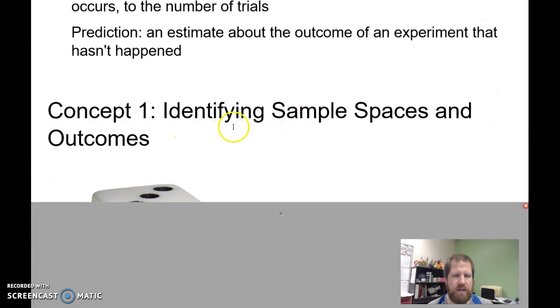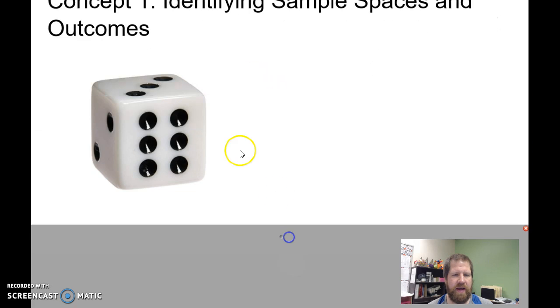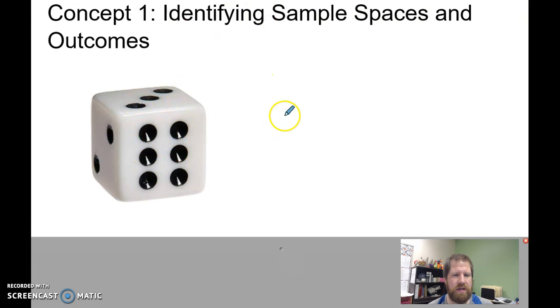Alright, so concept 1 is identifying sample spaces and outcomes. So if I have a die, my sample space is going to be every possible result. So I've got a set with 1, could roll a 1, 2, 3, 4, 5, and 6. That's my sample space. Those are all the possibilities, and we're not going to worry about the chance of rolling and having it end on an edge or something like that.